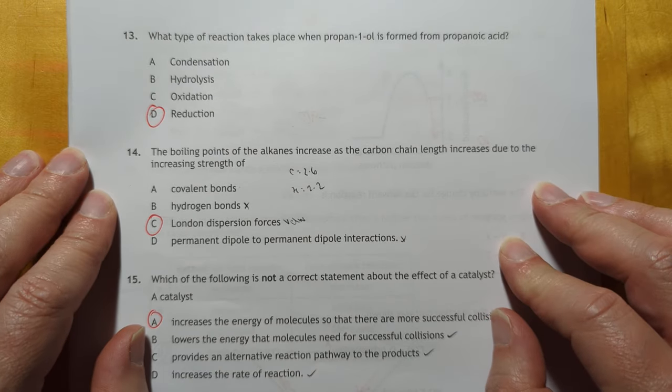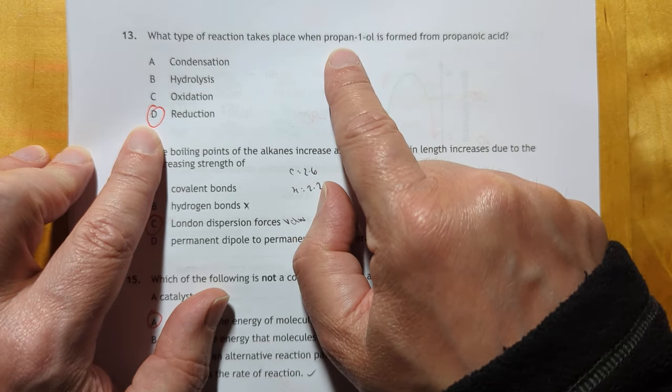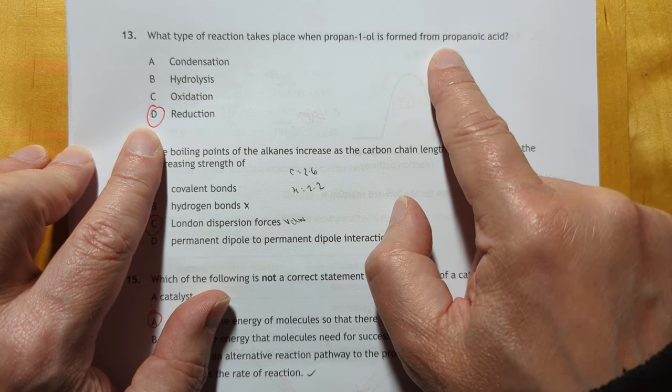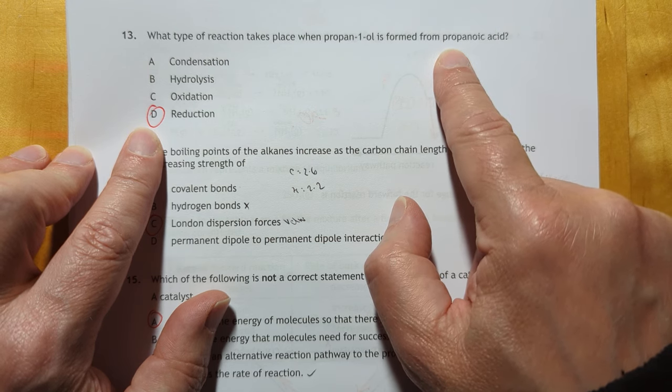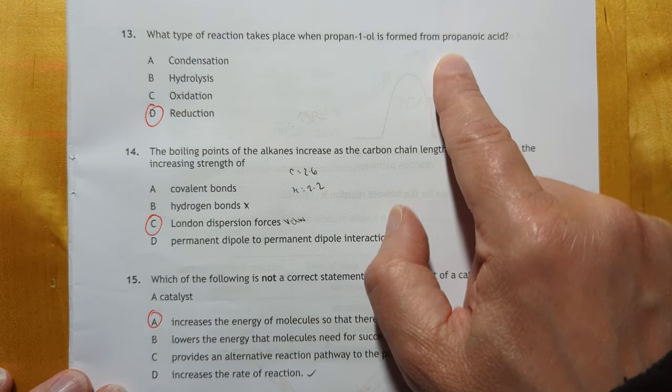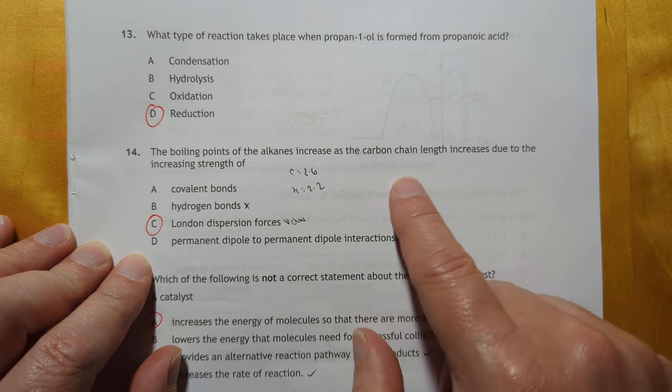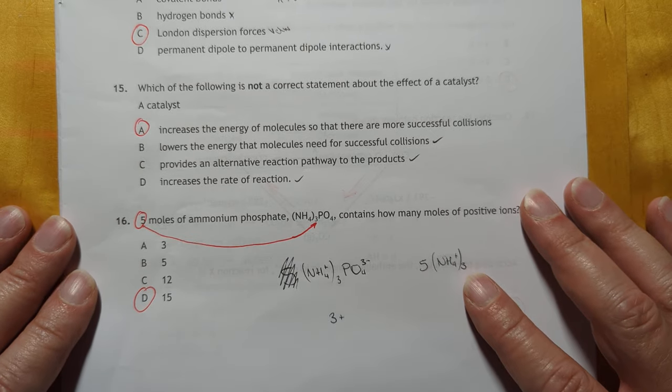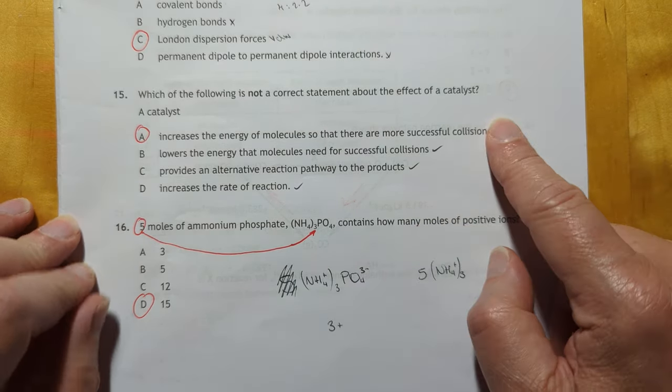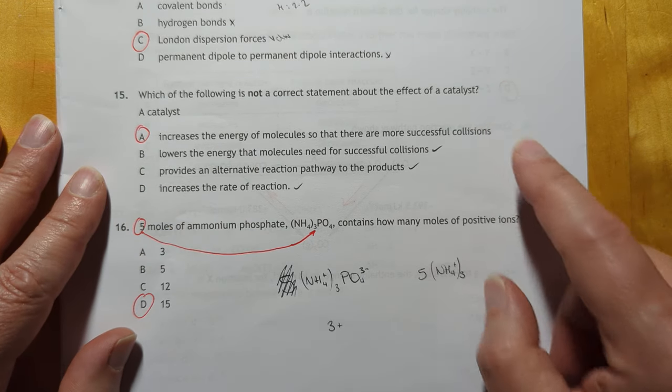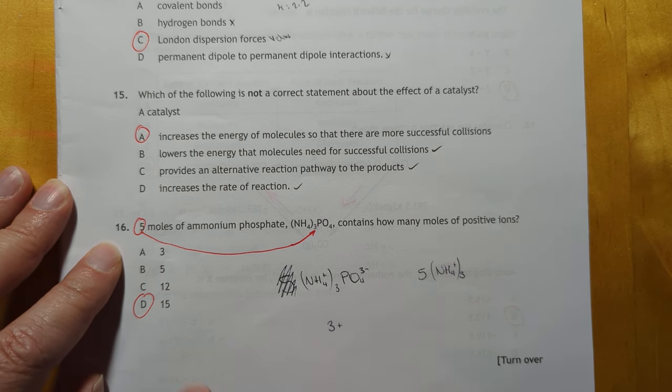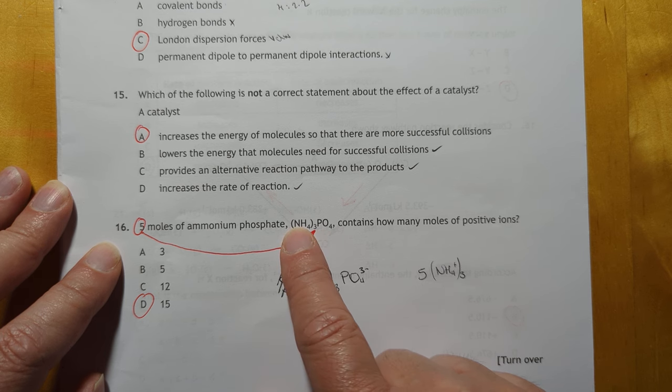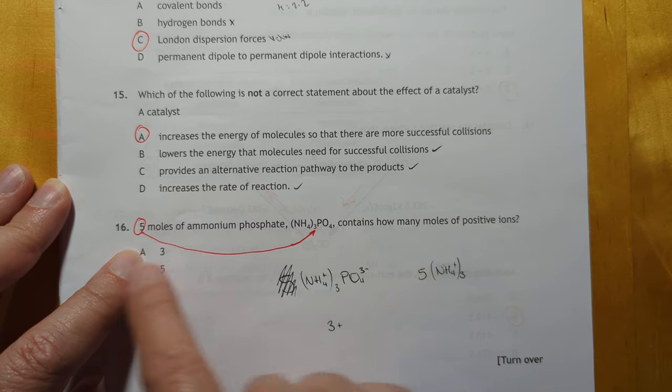Number 13 is the opposite of where they normally go. They normally go from alcohol to carboxylic acids, but we're going in reverse. You're going to go with that one rather than that one. It's not a great question. Boiling points of alkanes increases due to stronger London dispersion forces. Not a correct statement about the catalyst. It does not increase the energy of the molecules. You'd turn the temperature up for that. And this one here. Five moles of ammonium phosphate. Positive ions are ammonium ions. You'd be tempted to just go with 3, which of course is the first answer, but 5 times 3 is 15.